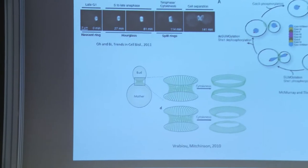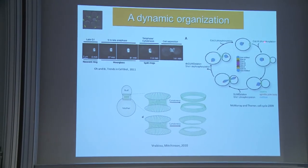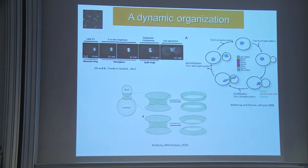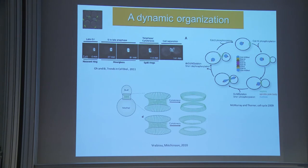During the cell cycle, septins undergo some modifications like phosphorylation, sumoylation or de-sumoylation. From a structural point of view, during cytokinesis they start from an hourglass shape and they split into two rings with perpendicular direction during cytokinesis by interacting with the actomyosin cortex rings.